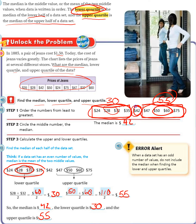To recap: find the number in the middle — that's your median. All the data points to the left are the lower half of the data, and you find the median of that for your lower quartile. All the data points to the right of the median — find the middle of just that data, and that is the upper quartile.